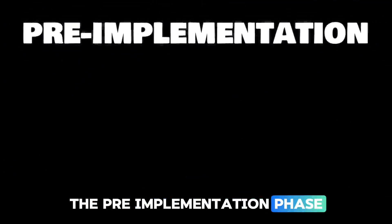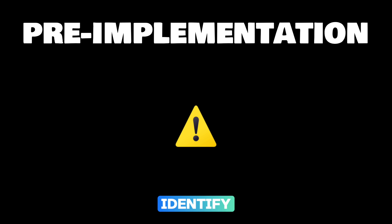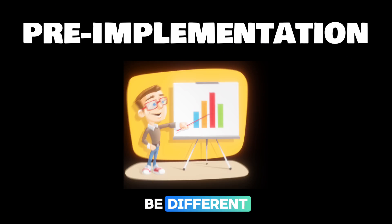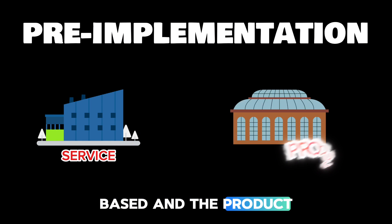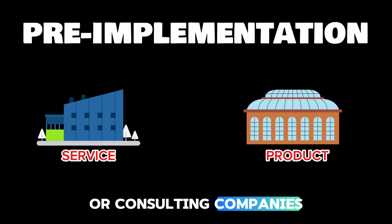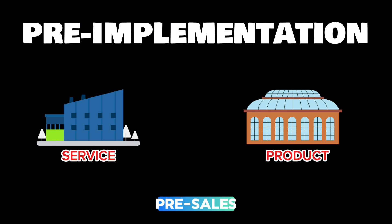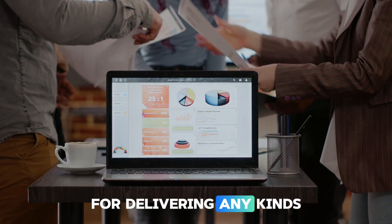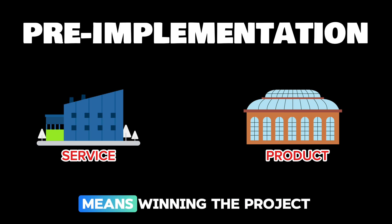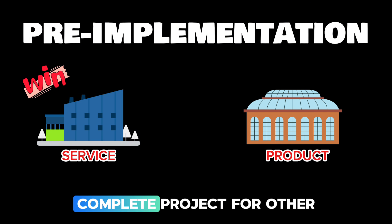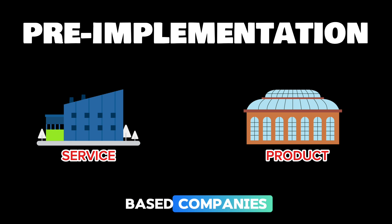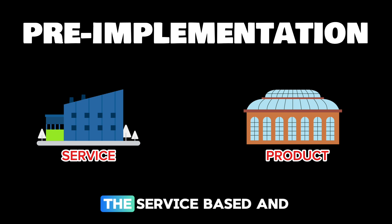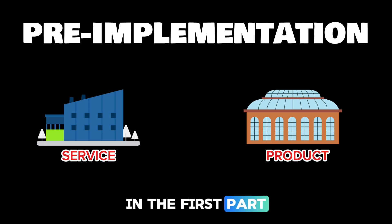Firstly, let's see about the pre-implementation phase. In this phase, the key thing is to identify why a data engineering project needs to be done in the first place. The approach for this is different when comparing service-based and product-based companies. In service-based or consulting companies, this phase is also referred to as pre-sales. Service companies work for other organizations delivering software solutions, so pre-sales means winning the project contract to build a complete project for another organization. Product-based companies, on the other hand, build the project for themselves based on their users' needs and business requirements.